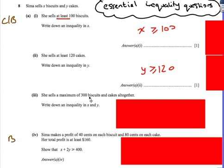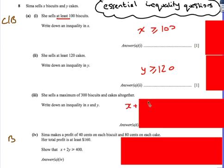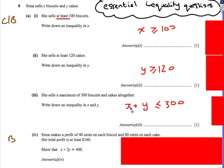She sells a maximum of 300 biscuits altogether. So therefore the number of biscuits and the number of cakes that she sells, the maximum, so therefore it's less than or equal to 300. So that's the third one.